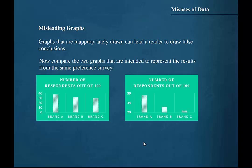Note that the graph on the right implies that the preference for brand A is many times the preference for brands B and C. By starting the y-axis at 0, the graph on the left demonstrates the true proportional relationship between the categories in the data set.